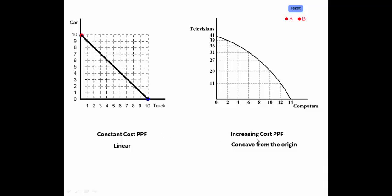Let's look at the Constant Cost Production Possibilities Frontier. This is a 1-to-1 ratio: 10 cars equals 10 trucks, so that is a 1-to-1 relationship, meaning constant cost. But we could have a situation where 1 car is equal to 2 trucks — so for every car that you give up the production of, you can produce 2 trucks.